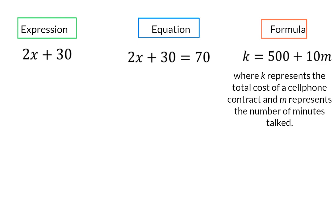In our example, K represents the total cost of a cell phone contract, and M represents the number of minutes talked during the month. So, here we can see that this contract has a fixed amount of 500 Rand per month, and then you pay 10 Rand for every minute that you talk.